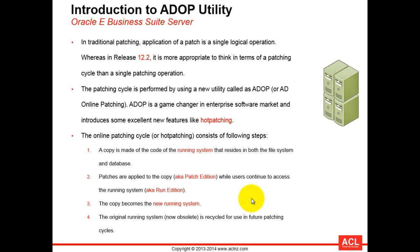Hot patching consists of a number of steps. The first thing you have to do is make a copy of the code from the running system, which resides in both the file system and the database. Patches are applied to this copy while users continue to access the running system. The running system is called the run edition, and the copy made is called the patch edition.